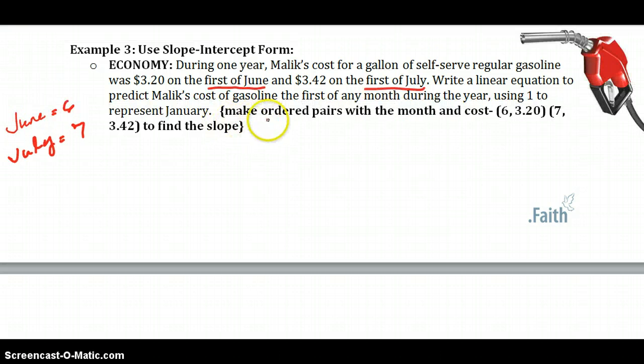So our hint here says make an ordered pair. So in June, the 6th month, it was $3.20. In July, the 7th month, it was $3.42. So the first thing I need to do is find my slope, which will be $3.42 minus $3.20 over 7 minus 6. And that gives me $0.22 per month. Seems to be the rate that it's changing.